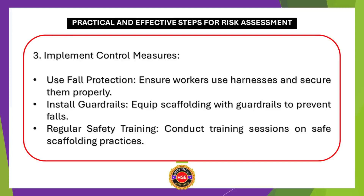For the potential hazard of fall from height, when implementing control measures: number one is use of fall protection — ensure workers use harnesses and secure them properly. Number two, install guardrails — equip scaffolding with guardrails to prevent falls. Number three, regular safety training — conduct training sessions on safe scaffolding practices.